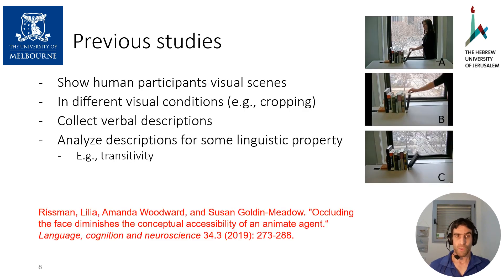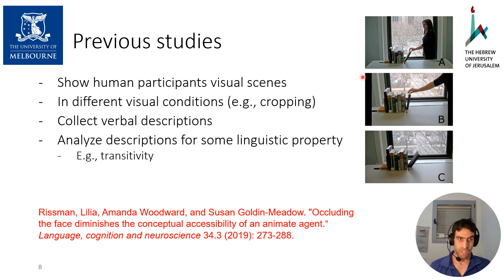Previous studies investigated these questions by experimenting on humans. Participants were shown several images of the same scene with different conditions — for example, by cropping some of the scenes. The participants were then asked to describe the image, and the linguistic properties of the descriptions were manually analyzed. For example, one study showed that when cropping the agent, participants were more likely to produce intransitive sentences.